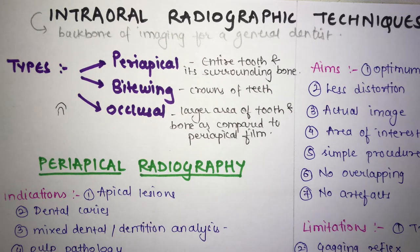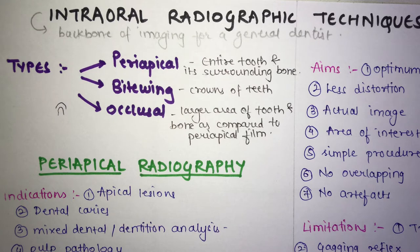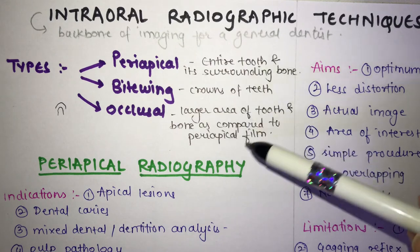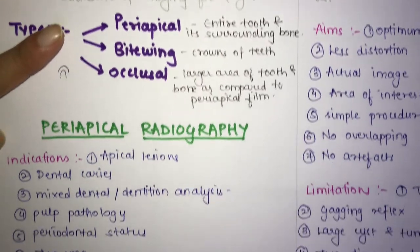There are two methods for periapical radiography: the paralleling angle technique and the bisecting angle technique. Bitewing radiography shows the crowns of the maxillary and mandibular teeth and the adjacent crestal bone, used to examine those crowns. Occlusal radiography reveals a larger part of the tooth and bone compared to the periapical field, which shows a more restricted area.